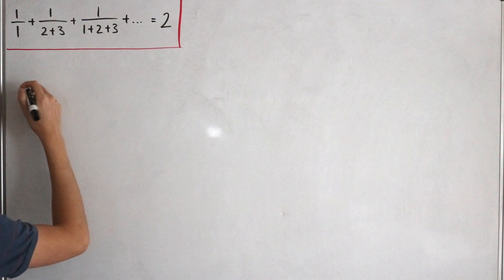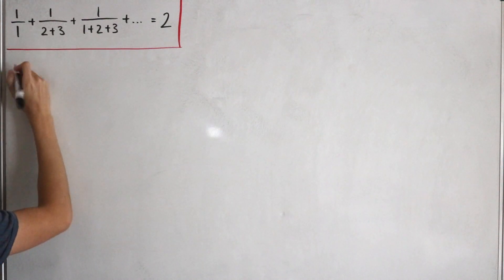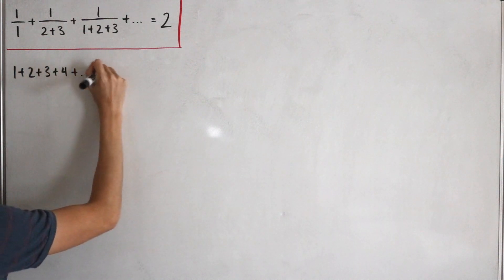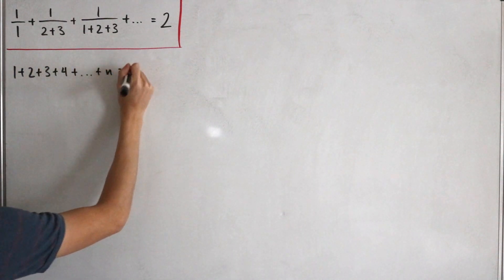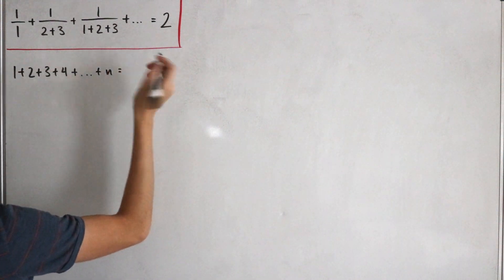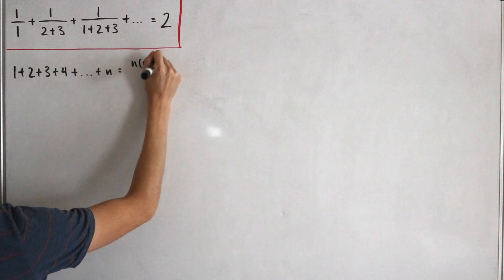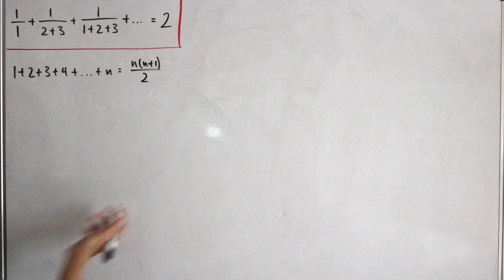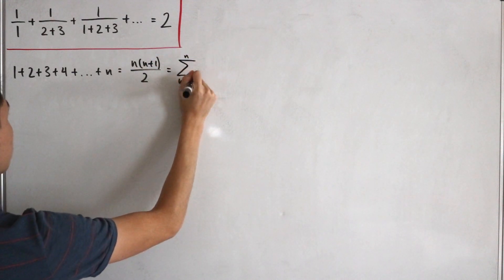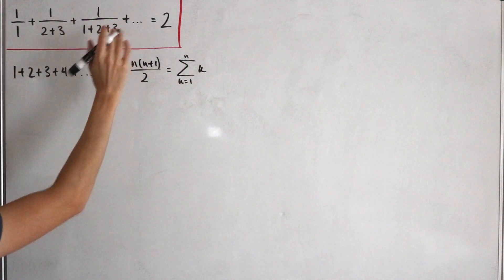From the denominator, we notice that one plus two plus three plus four all the way up to n follows the formula for the sum of the natural numbers. That formula is n times n plus one divided by two, which also equals the partial sum from k equals one to n of k.